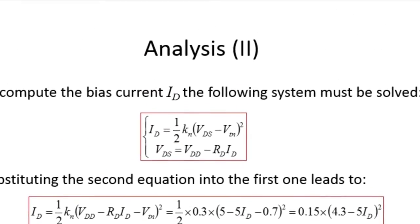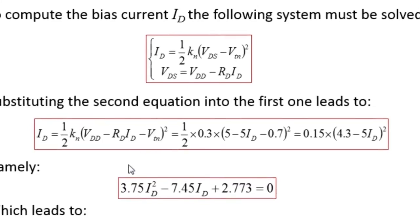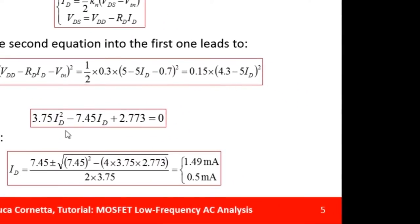To compute the drain current, I have to solve this very simple system of two equations. By substituting the second equation into the first one, I obtain an expression for ID. Solving this simple second order equation, I have two solutions for my drain current, namely 1.49 milliamps and 0.5 milliamps.